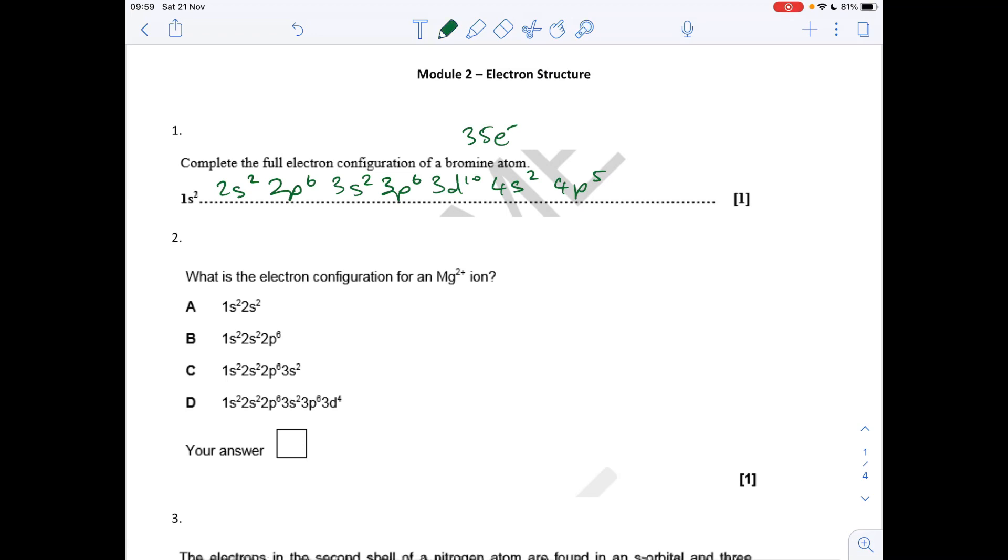Question two: electron configuration for an Mg2+ ion. That's got 10 electrons. The atom's got 12, but it's lost two electrons to go to the 2+ ion, so it's B.